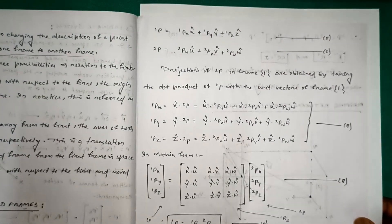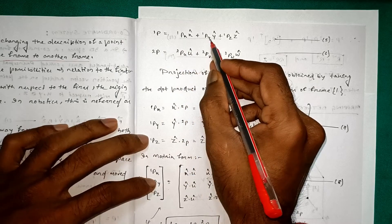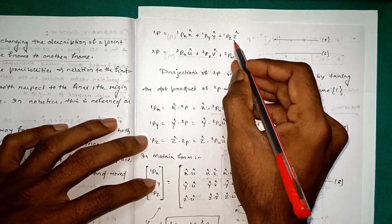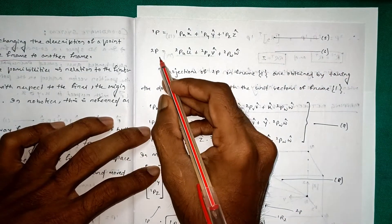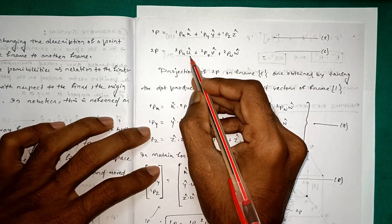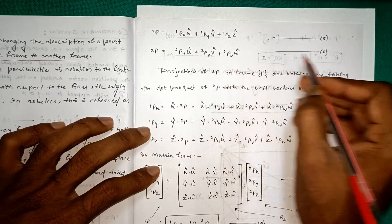So now we can see 1P is equal to 1PX x cap plus 1PY y cap plus 1PZ z cap, and this is our equation number 5. So 2P is equal to 2PU u cap plus 2PV v cap plus 2PW w cap, this is our equation number 6.